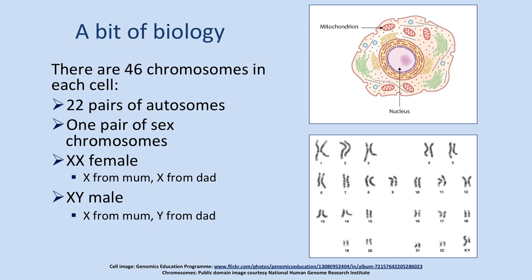A little bit of very basic biology: in every cell in our body there is a nucleus containing structures called chromosomes — the genetic code, sometimes called the blueprint of life. Chromosomes come in pairs: we have 23 pairs — 23 from our mother and 23 from our father. Twenty-two of those pairs are the autosomes, which are like a patchwork of DNA from all four grandparents. The final pair are the sex chromosomes: males have a Y chromosome from their father and an X from their mother; females have two X chromosomes.